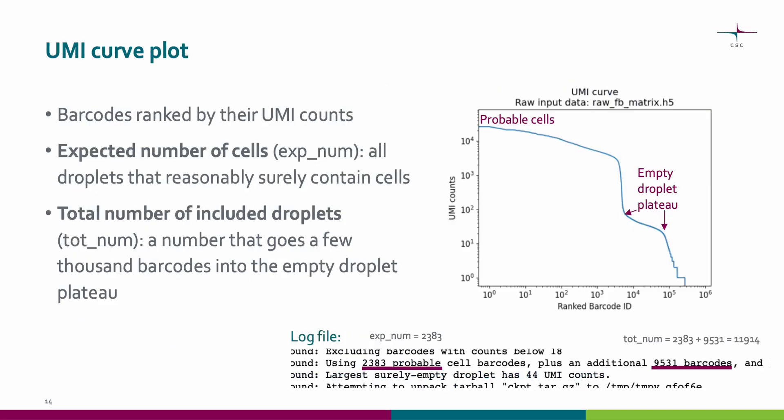The automated report file produces a UMI curve plot. It shows barcodes ranked by their UMI counts. You should use this plot and the log file to see if the automatically estimated values for the expected number of cells and total number of droplets included seem reasonable. The expected number of cells should include all droplets that reasonably surely contain cells. In this example, you can see from the log file that 2,383 are estimated to be surely cells. The total number of included droplets should include a number that goes a few thousand barcodes into the empty droplet plateau and include some droplets that are reasonably surely empty. In this example, this value is the sum of these values in the log file, so almost 12,000, and indeed goes a few thousand barcodes into the empty droplet plateau.